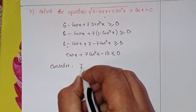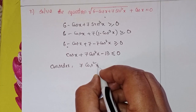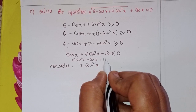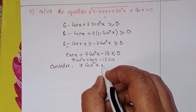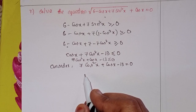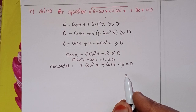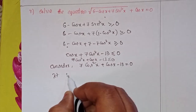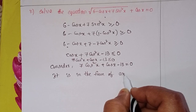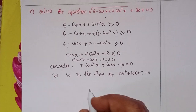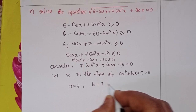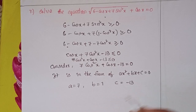Consider 7 cos²x plus cos x minus 13 equal to 0. This is in the form ax² plus bx plus c equal to 0, where a equals 7, b equals 1, and c equals minus 13, with x meaning cos x.